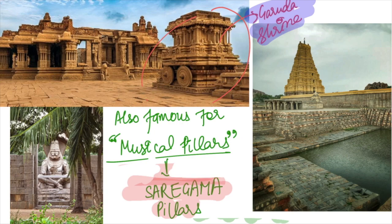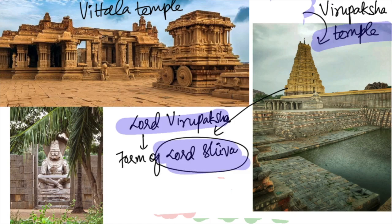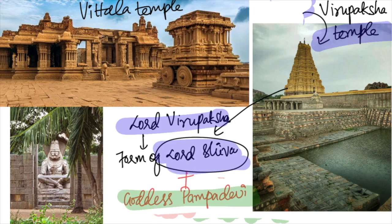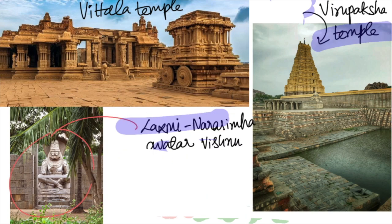After the Vithala Temple, we see the Virupaksha Temple, dedicated to Lord Virupaksha — a form of Lord Shiva — and also housing Goddess Pampa Devi. The temple was built under the ruler Deva Raya II by Lakkan Dandesha. Finally, there is the monolithic statue of Ugra Narasimha, an avatar of Lord Vishnu, seated in a yoga position.